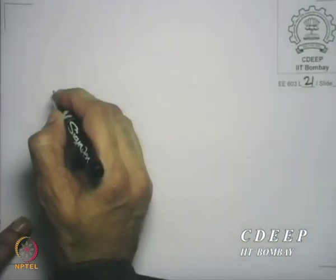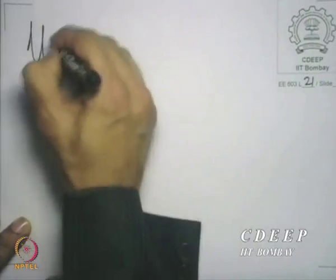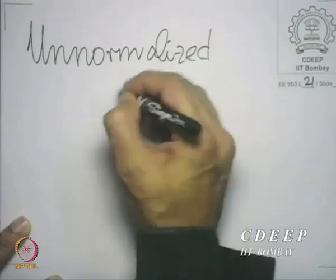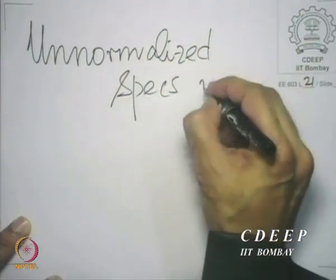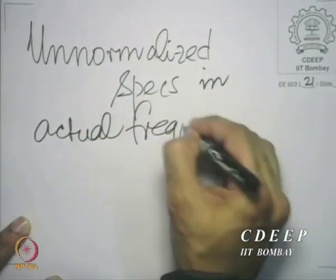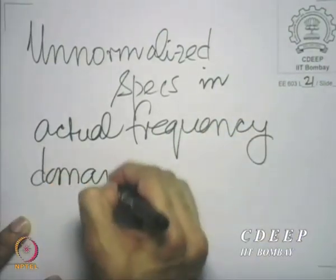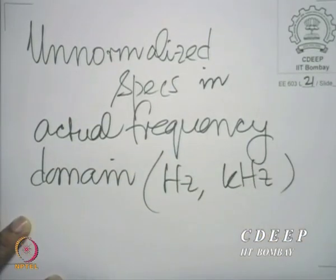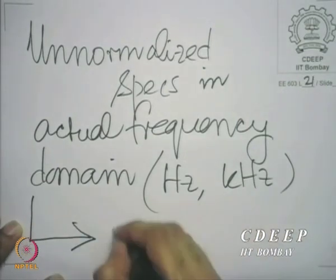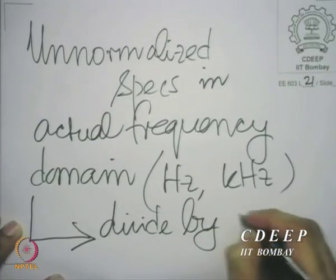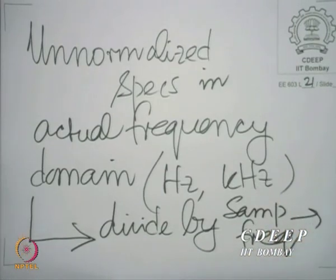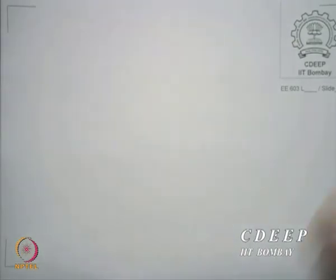We need to recapitulate a few ideas before we proceed to a specific kind of design. For IIR filter design, we shall follow the following process. We would first identify what are called the unnormalized specifications, which would be given to us in the actual frequency domain — in terms of hertz, kilohertz, and so on. We then divide these by the sampling frequency and get what are called the normalized specifications.